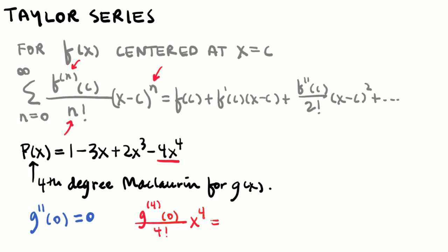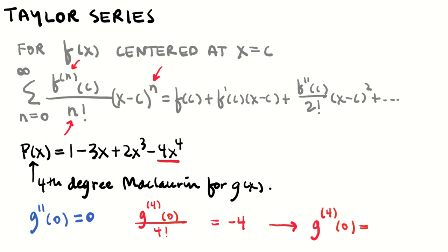That equals −4x^4. So the x^4 factors cancel, giving g^(4)(0) / 4! = −4, which means g^(4)(0) = 4! × (−4) = 24 × (−4) = −96. That's how we use a polynomial to find the value of a derivative.